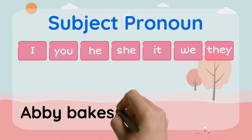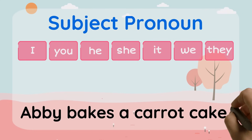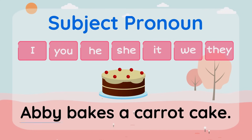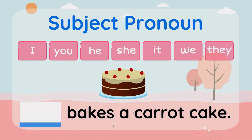Abby bakes a carrot cake. In this sentence, Abby is the noun — or more specifically, a proper noun. What should we replace Abby with? Abby is a girl, so we're going to replace it with she. She bakes a carrot cake.